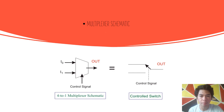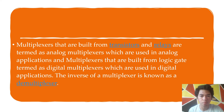This is the schematic of the multiplexer, considered as a controlled switch with only one switch selected out of many inputs. Multiplexers built from transistors and relays are termed analog multiplexers, used in analog applications, while multiplexers built from logic gates are termed digital multiplexers.